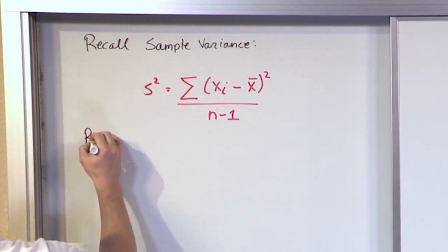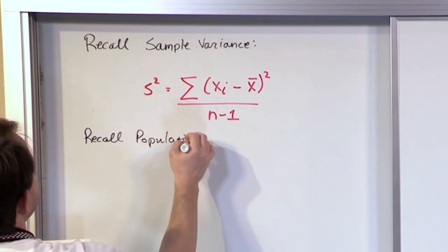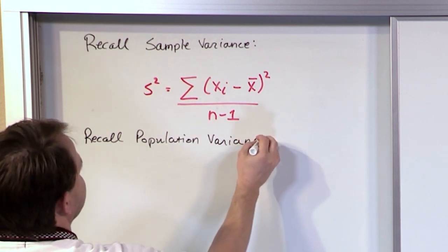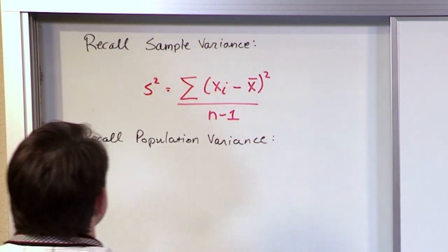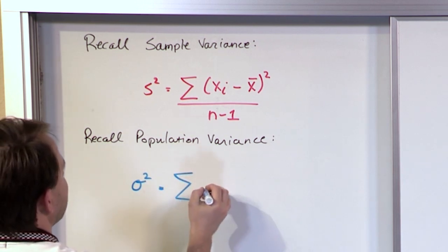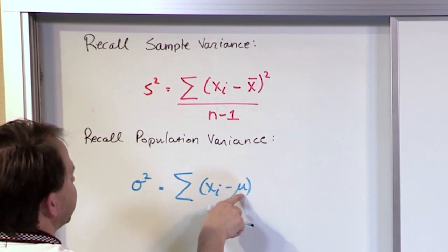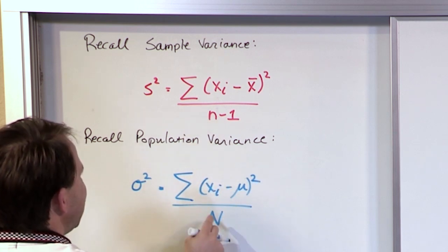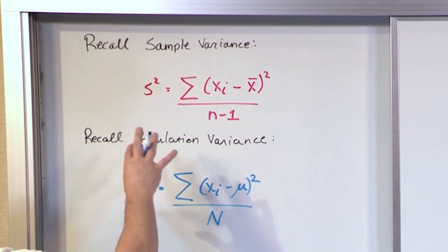Recall also the population variance. We called it sigma squared, and it was the sum of all of the data points minus the population mean, everything squared, divided by N — the total number of people or items in the population. This is what we've learned before.